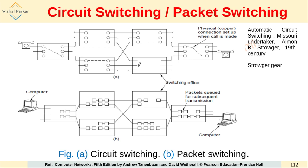Coming back to circuit switching — in old times, there used to be operators at the switching offices who would simply connect an incoming line to an outgoing line using switches. The manual system was then converted to an automatic system, due to a person called Almon B. Strowger from Missouri, who was an undertaker — a person who looks after preparing deceased persons for their funerals.